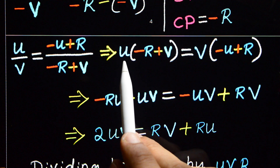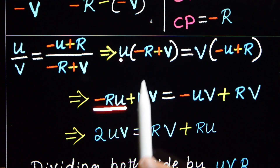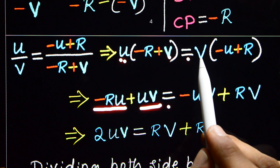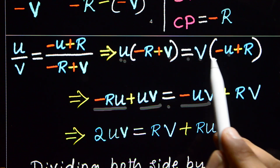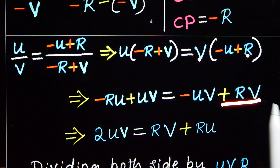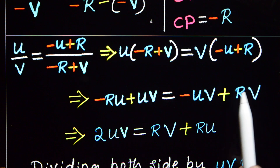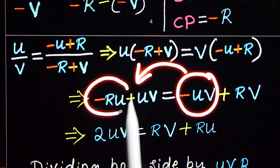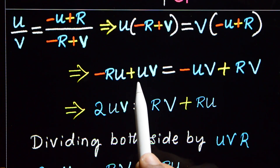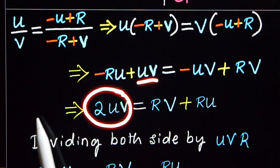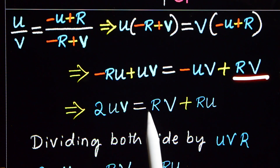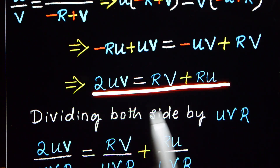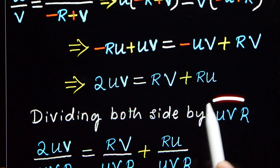Multiplying out: minus R plus V multiplied by U equals V multiplied by minus U plus R. Expanding: minus RU plus UV equals minus UV plus RV. Rearranging by moving minus UV to the right side: UV plus UV equals RV plus RU, which gives 2UV equals RV plus RU. Now dividing both sides by UVR.